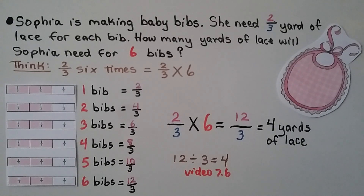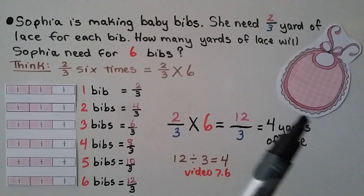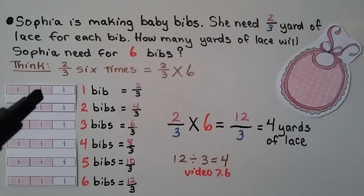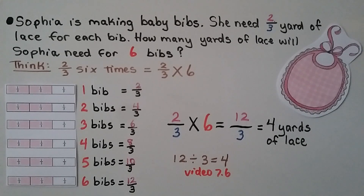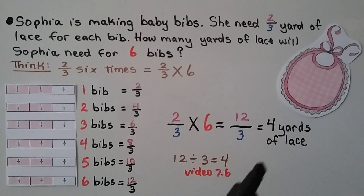Sophia is making baby bibs. She needs 2 thirds yards of lace for each bib. How many yards of lace will she need for 6 bibs? She uses 2 thirds yard per bib and wants to make 6 bibs, so we think 2 thirds times 6. For 1 bib: 2 thirds. For 2 bibs: 4 thirds. For 3 bibs: 6 thirds. For 4 bibs: 8 thirds. For 5 bibs: 10 thirds. For 6 bibs: 12 thirds. So 2 thirds times 6 equals 12 thirds. We do 12 divided by 3, which comes out evenly as 4. That's 4 yards of lace.